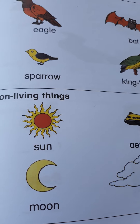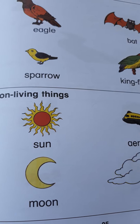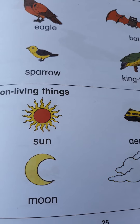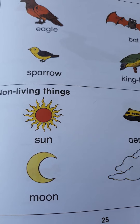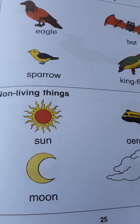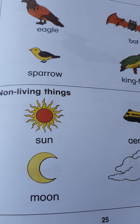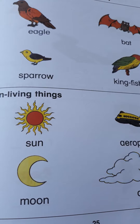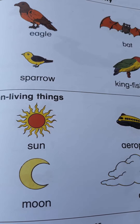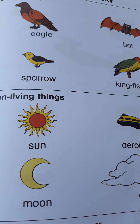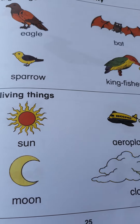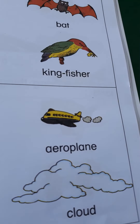In the daytime, we get the sun from the sky. The sun is a non-living thing. The sun is not breathing — it is a non-living thing in the sky.